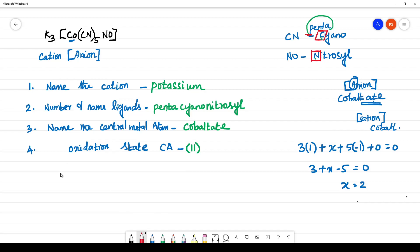Finally, what is the name of the complex? It is potassium, potassium, penta, cyano, nitrosyl, cobaltate 2.